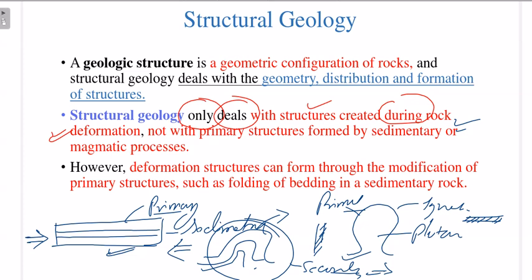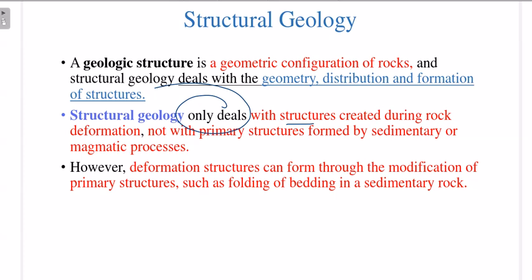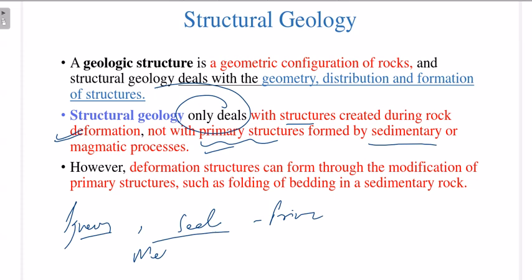The structural geologist deals with secondary structures. This definition of structural geology is very important — structural geology only deals with structures created during rock deformation, not with primary structures formed by sedimentary or igneous processes. Igneous and sedimentary rocks are also called primary rocks, and metamorphic rock is basically the deformed version of these two rocks.